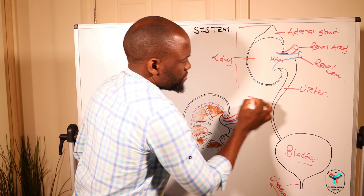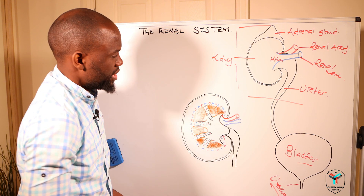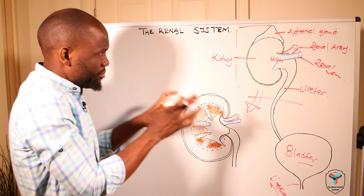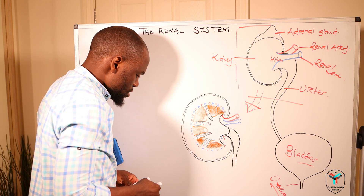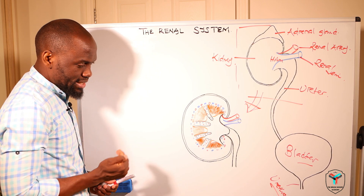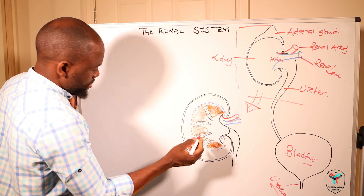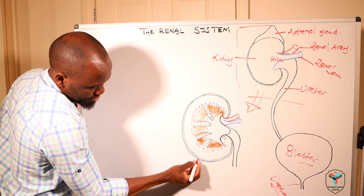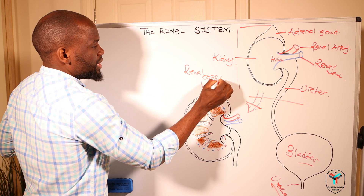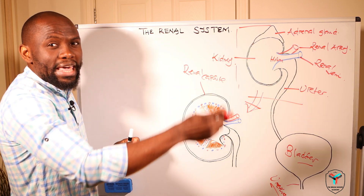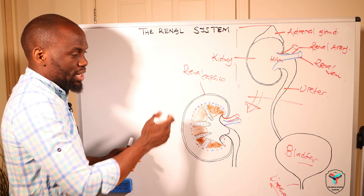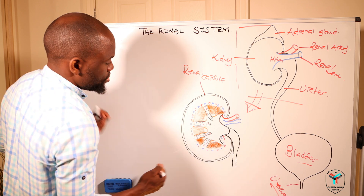Now we're going to zoom into this structure and look at the microscopic structure of the kidney itself. Before we get to the inner aspect of the kidney, it is important to understand there are certain layers we encounter first. There is a line at the top representing what we call the renal capsule — the kidney is encapsulated in this layer. Before we even reach the cortex, you have the fascia, and then fat, and then you get to the renal cortex.